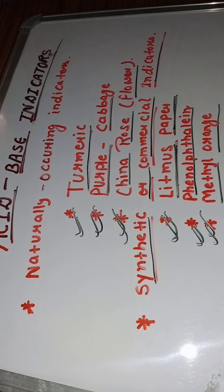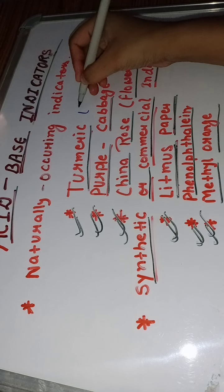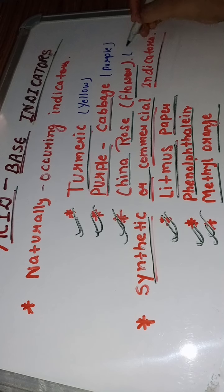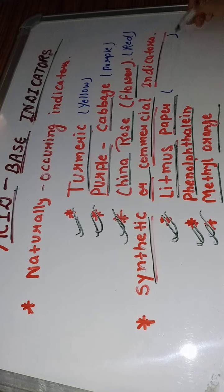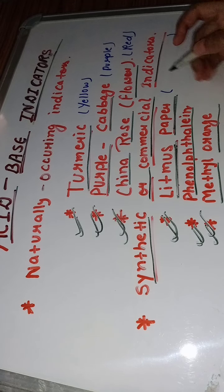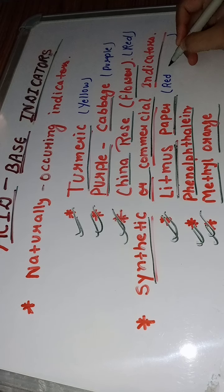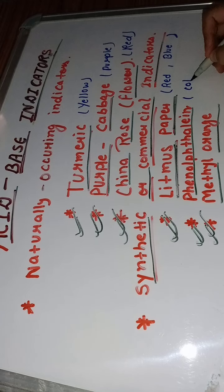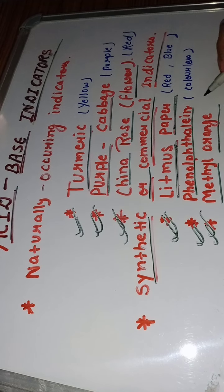We mostly use litmus paper in our schools, and at home we use turmeric, purple cabbage, and china rose. The natural color of turmeric is yellow, purple cabbage is purple in color, and china rose is red in color. Litmus paper is used as an indicator for both acid and base — we use red litmus paper and blue litmus paper. Phenolphthalein is a colorless indicator used for bases, and methyl orange is orange in color.